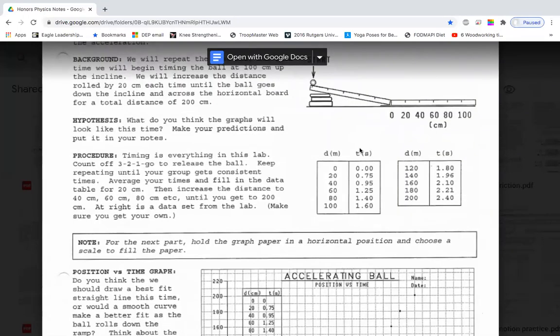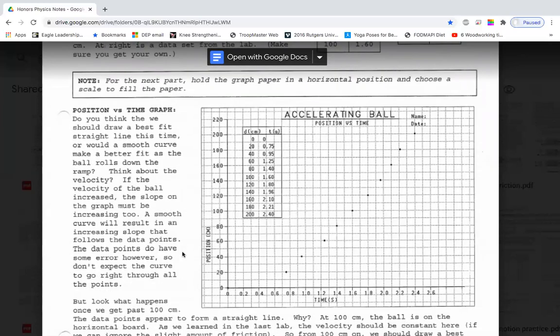In this example, I have data for the ball rolling down the hill. On the YouTube video, you can use your own stopwatch and get your own data. We're going to plot the position versus time. We have zero, zero. And then some time later, we've traveled to 20 centimeters.